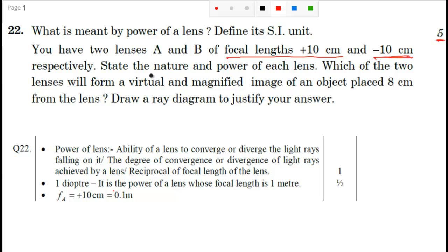State the nature and power of each lens, which of the two lenses will form a virtual and magnified image of an object placed 8 cm. Again important point guys. 8 cm that means your object is in between principal focus and optical center of that lens. Draw a ray diagram to justify your answer.